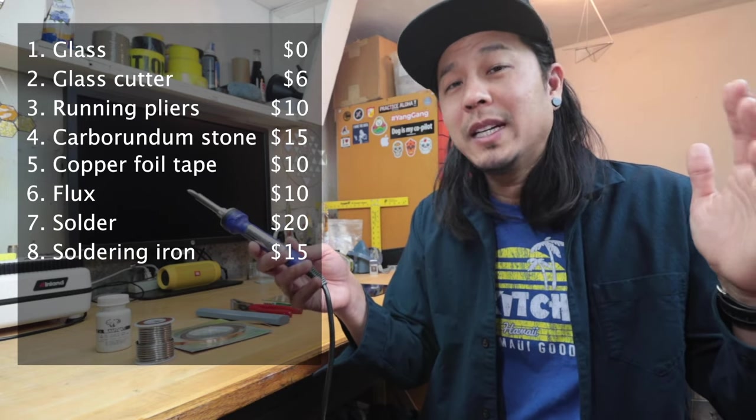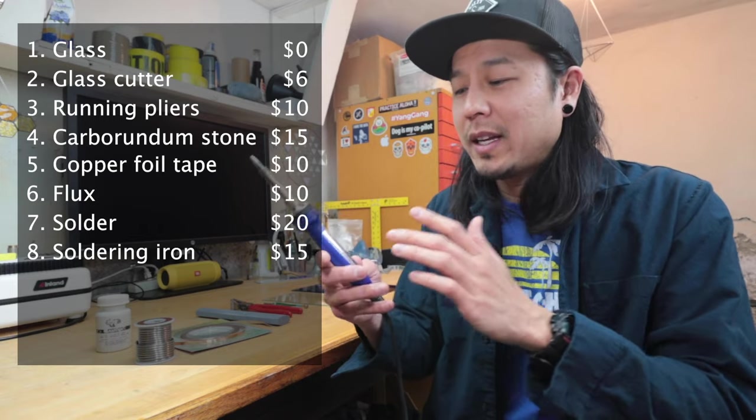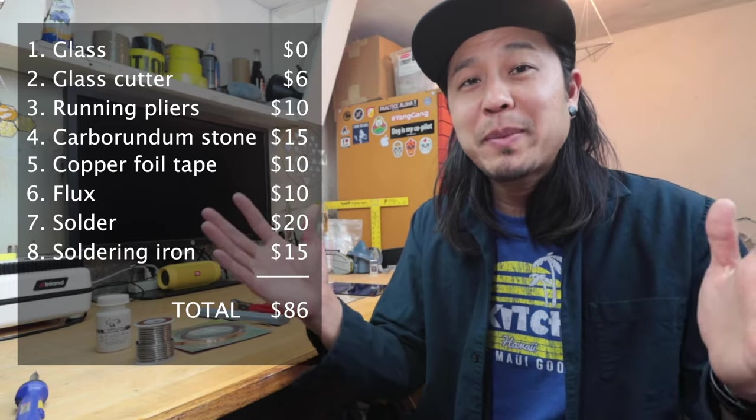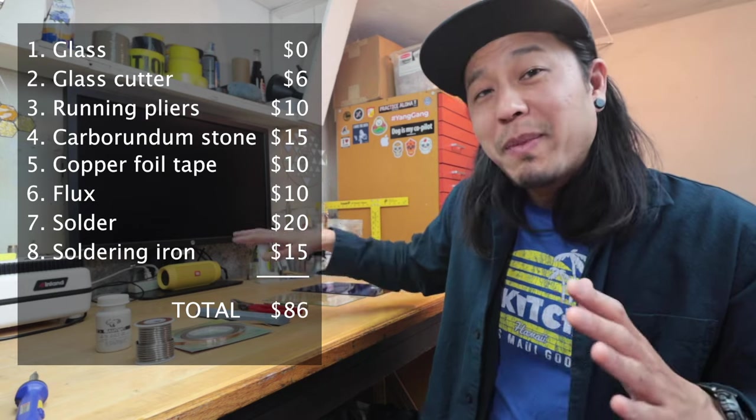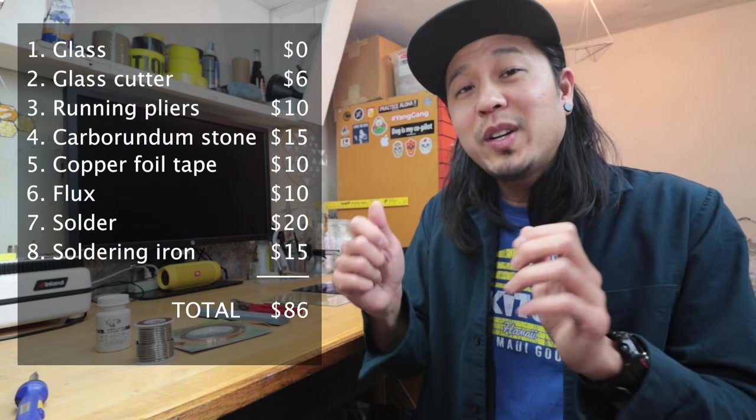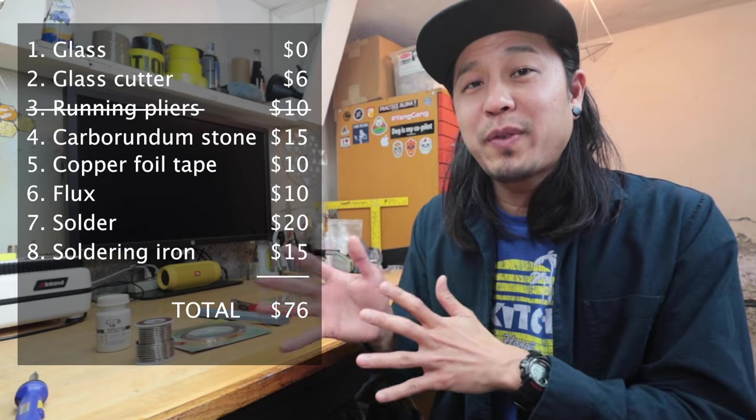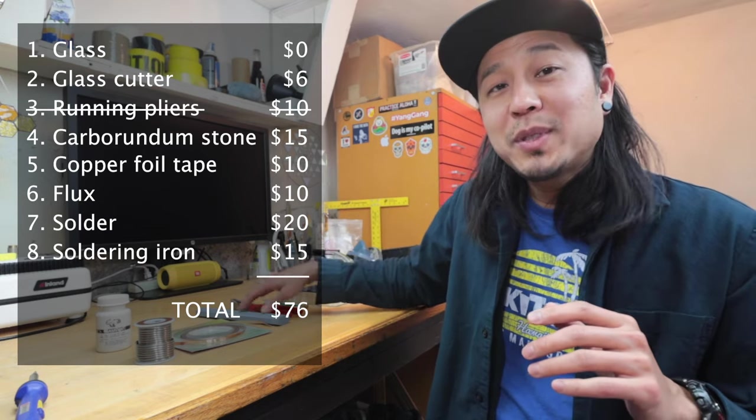Go for that one if you're cash strapped, but I would highly recommend upgrading when you can to this model here. The total comes out to $86 for everything that we had just talked about. But to go even cheaper than that, you can get rid of the running pliers. I would not recommend it, but you can actually score and break the glass with your hands. And so that only works on certain projects. But I would highly advise against it. You'll save yourself $10 if you can figure out a different way to break the glass. Not recommending it, but it's been done.